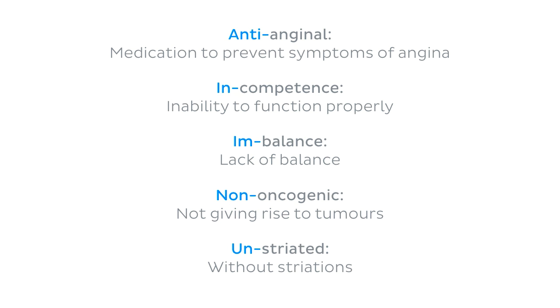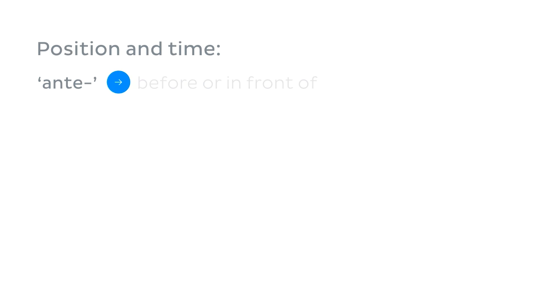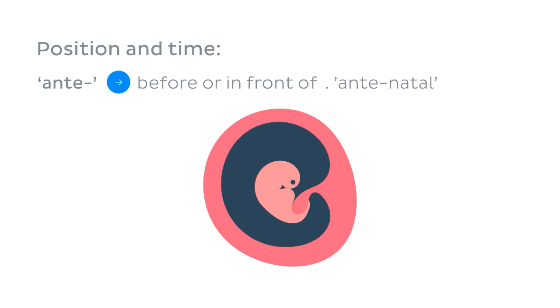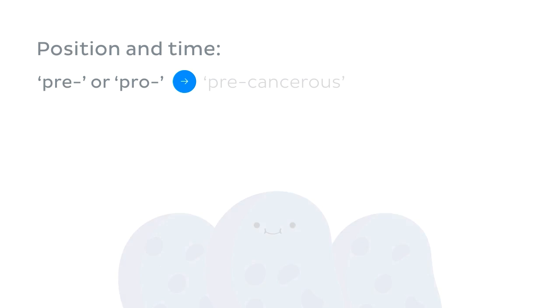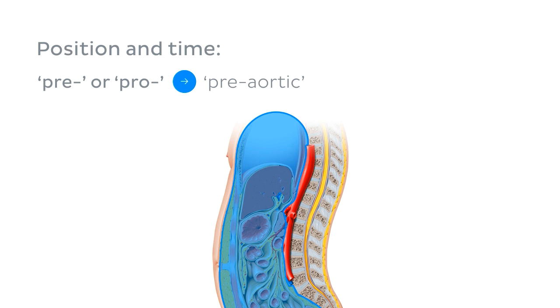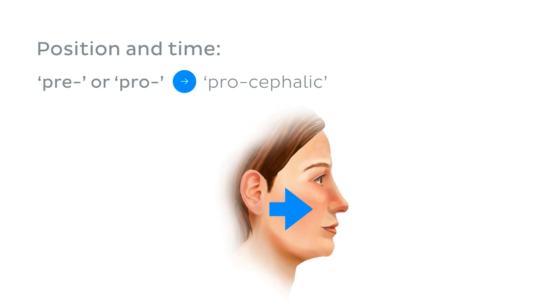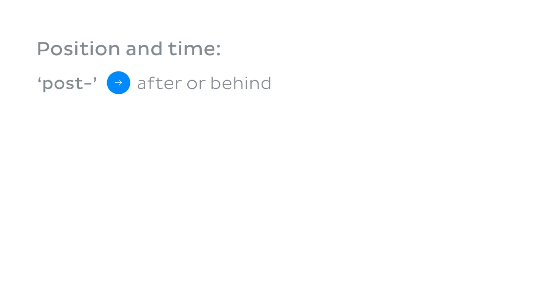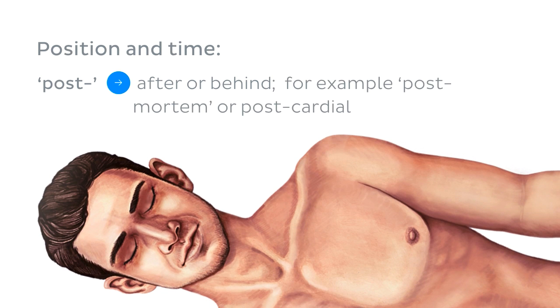The final category of common prefixes are those which add detail about position or time relative to another event or structure in the body. 'Ante' means before or in front of — for example, antenatal, meaning before birth. 'Pre' or 'pro' can have similar meanings, as in precancerous, preaortic, or procephalic. The opposite is 'post,' referring to something after an event or behind another structure — for example, postmortem, meaning after death, or postcardial, meaning behind the heart.